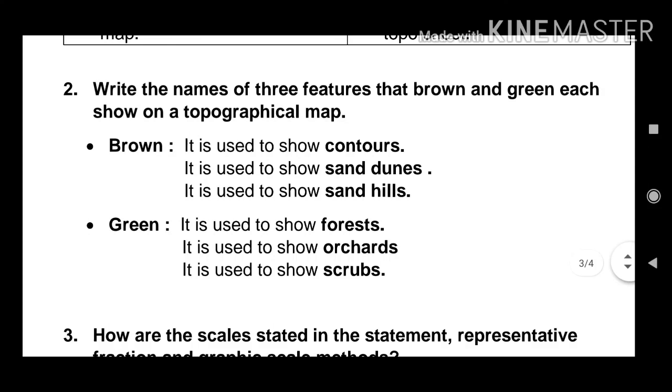Next question. Write the names of three features that brown and green each show on a topographical map. Brown. It is used to show contours. It is used to show sand dunes. It is used to show sand hills. Then green. It is used to show forests. It is used to show orchards.